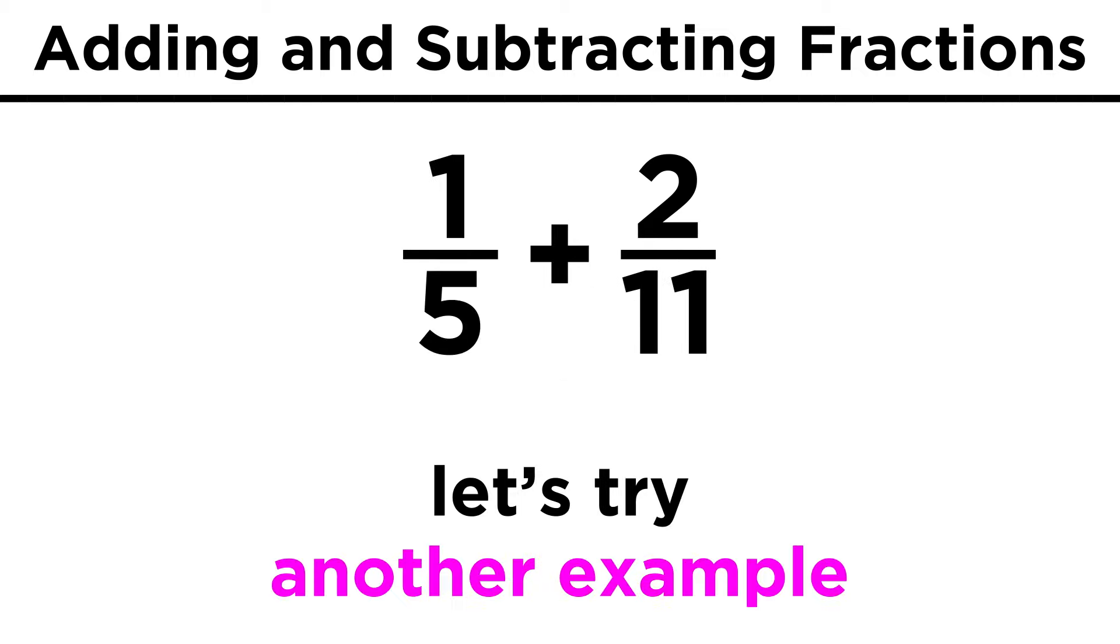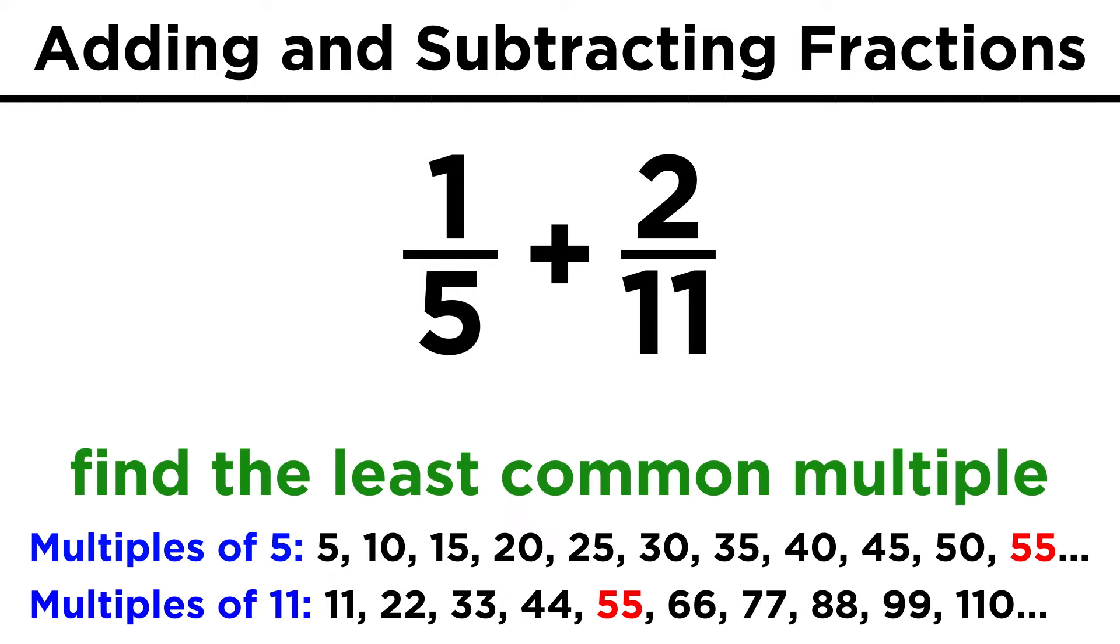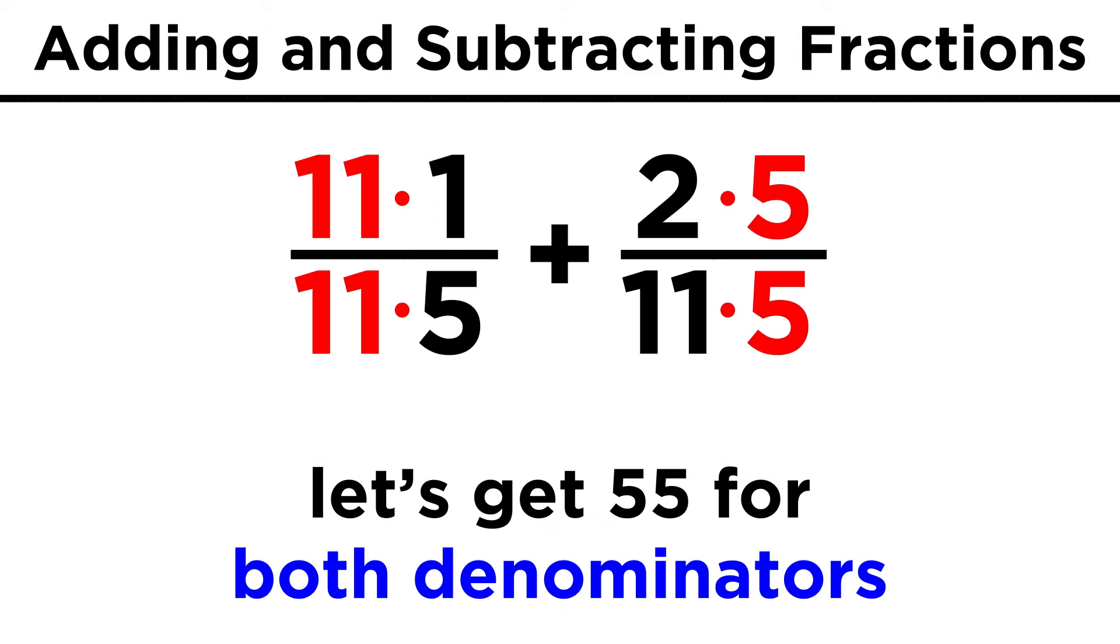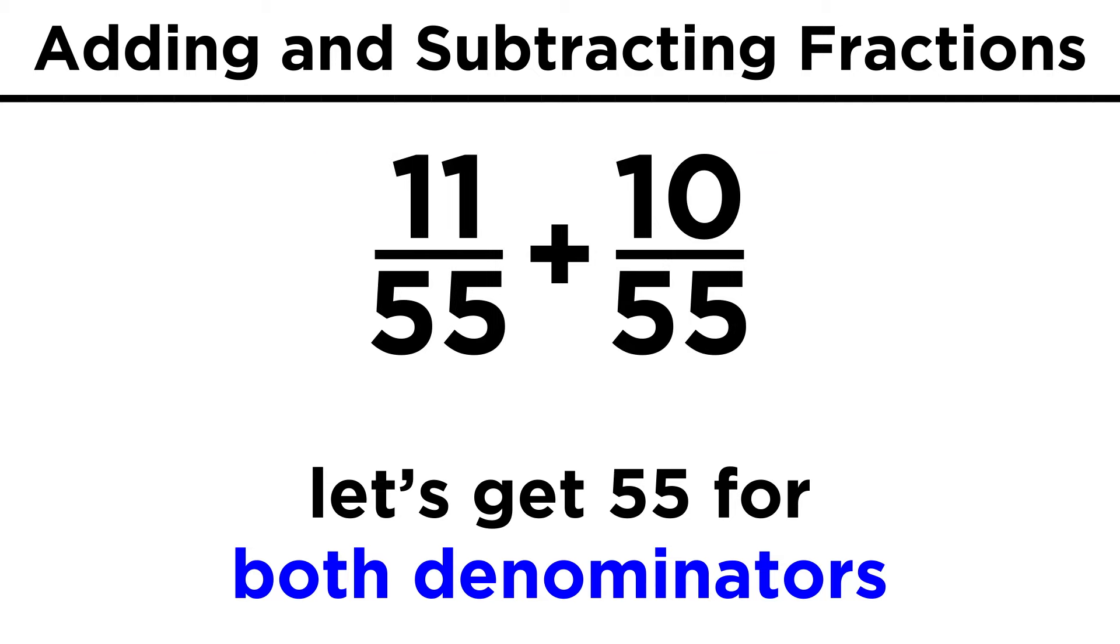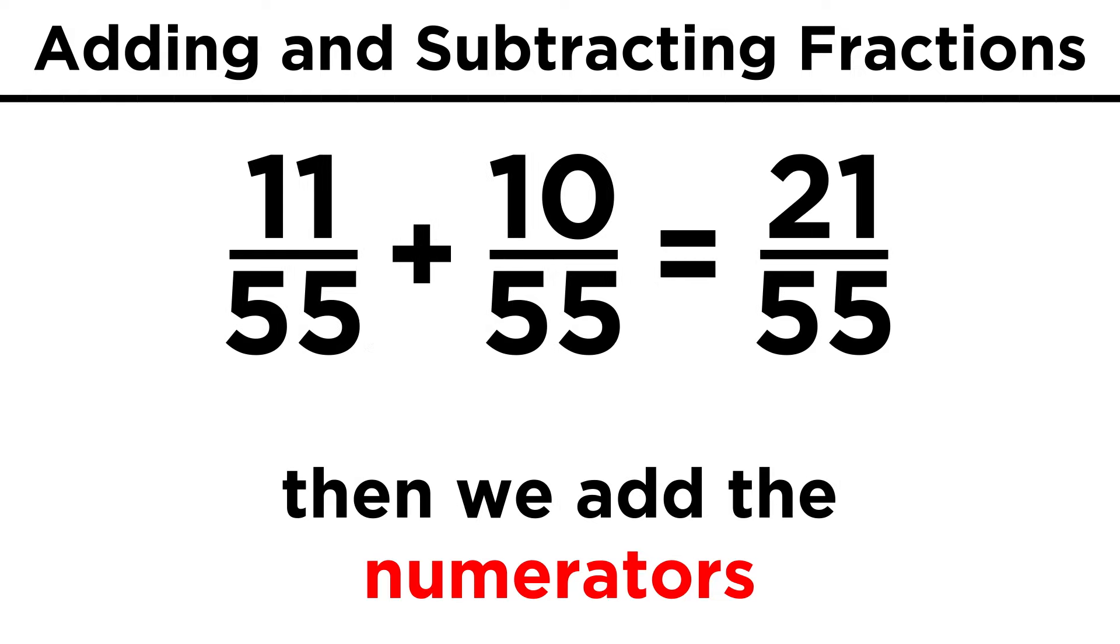How about a trickier one, one fifth plus two elevenths? Well the least common multiple of five and eleven is their product, fifty-five. So let's multiply by eleven over eleven, and five over five, which will change these to eleven over fifty-five, and ten over fifty-five. That gives us twenty-one over fifty-five, and that's all there is to it.